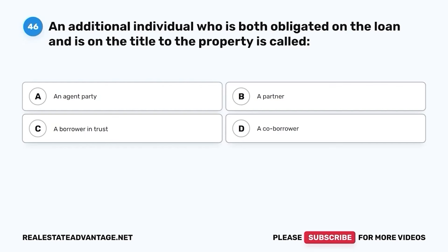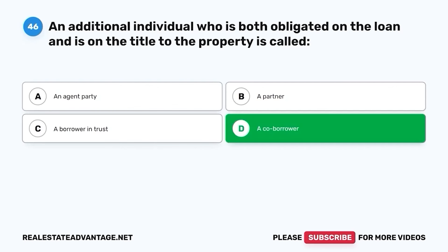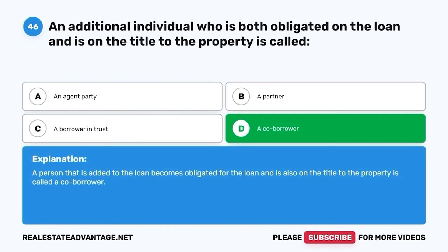Question 46. An additional individual who is both obligated on the loan and is on the title to the property is called: A. An agent party. B. A partner. C. A borrower in trust. D. A co-borrower. The correct answer is D. A co-borrower. A person that is added to the loan becomes obligated for the loan and is also on the title to the property is called a co-borrower.